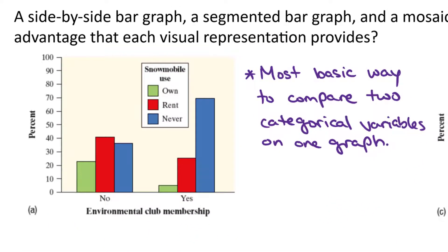In part A, we see the most basic way to compare two categorical variables on one graph. That's with the side-by-side bar graph. So on the horizontal axis, we determine one of our variables, the environmental club membership, yes or no. And then side-by-side, we're going to create adjacent bars for those who own a snowmobile, rent a snowmobile, or have never used a snowmobile. Notice that we still keep a space between the yes and no, the different categories for environmental club, but we will have that other variable's bars adjacent, so the own, rent, or never used.